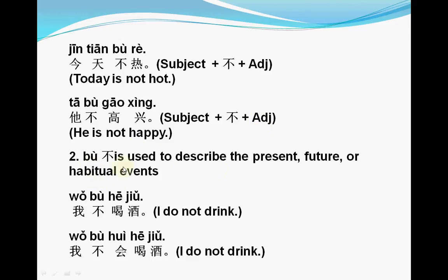The second usage: 不 is used to describe present, future, or habitual events. For example, 我不喝酒 means 'I don't drink.' This describes a habit — this is how I am. You can also interpret it as 'I don't know how to drink.' This describes a present state or habitual action.